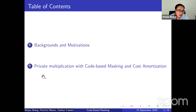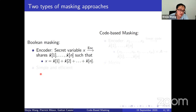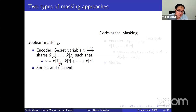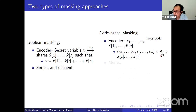Masking is one of the most investigated countermeasures against side-channel attacks. It encodes each circuit into several shares. Boolean masking is a common type, where the sum of shares gives the circuit — quite simple and efficient. In this work, we consider code-based masking, whose encoder is more complicated. It encodes several separate variables into shares together using a linear code, calculating the separate variable and several random variables into a vector as a message, multiplying by a generating matrix to produce a codeword vector of shares. This is a generalization of many previous masking schemes such as inner product masking and direct sum masking.